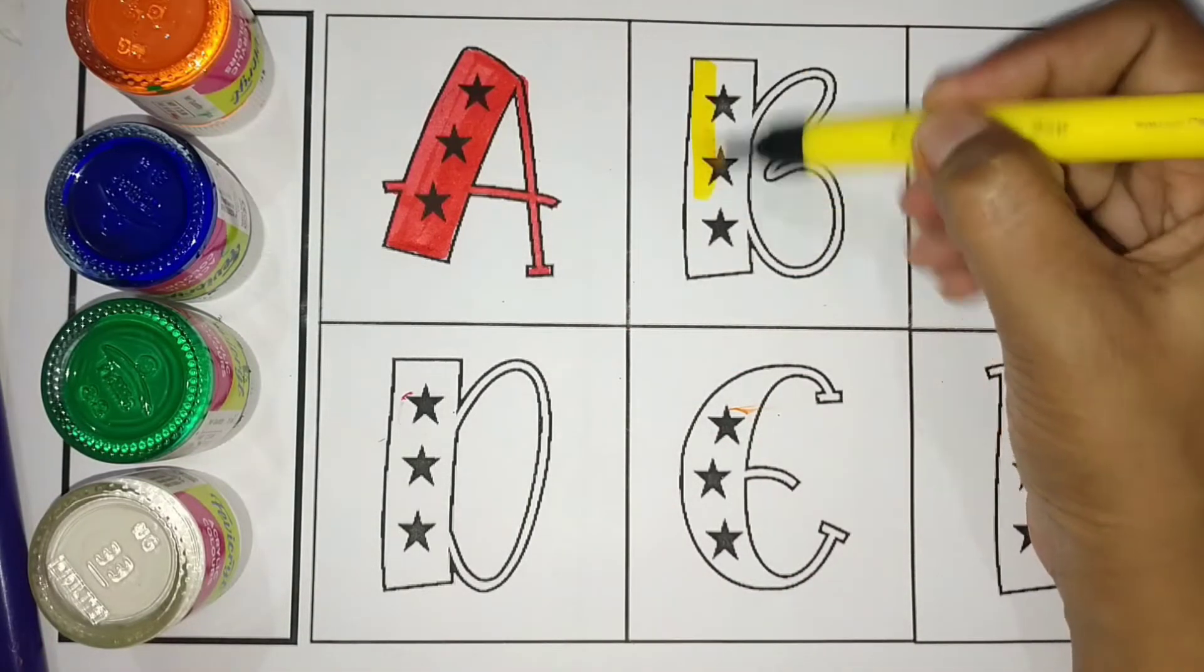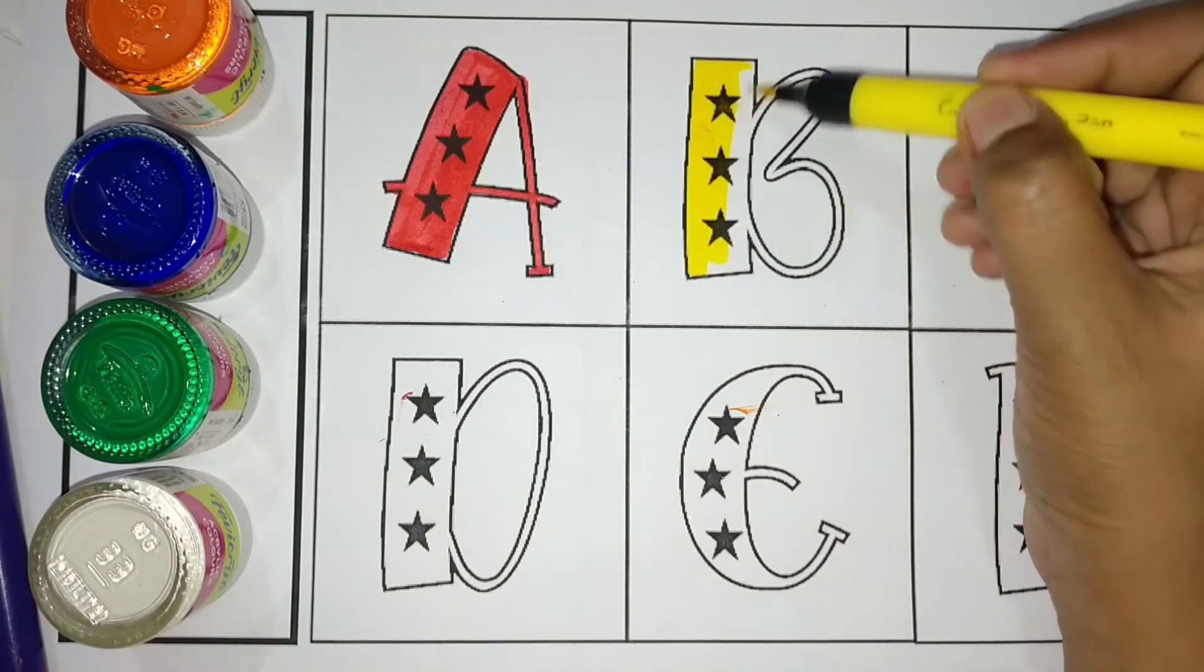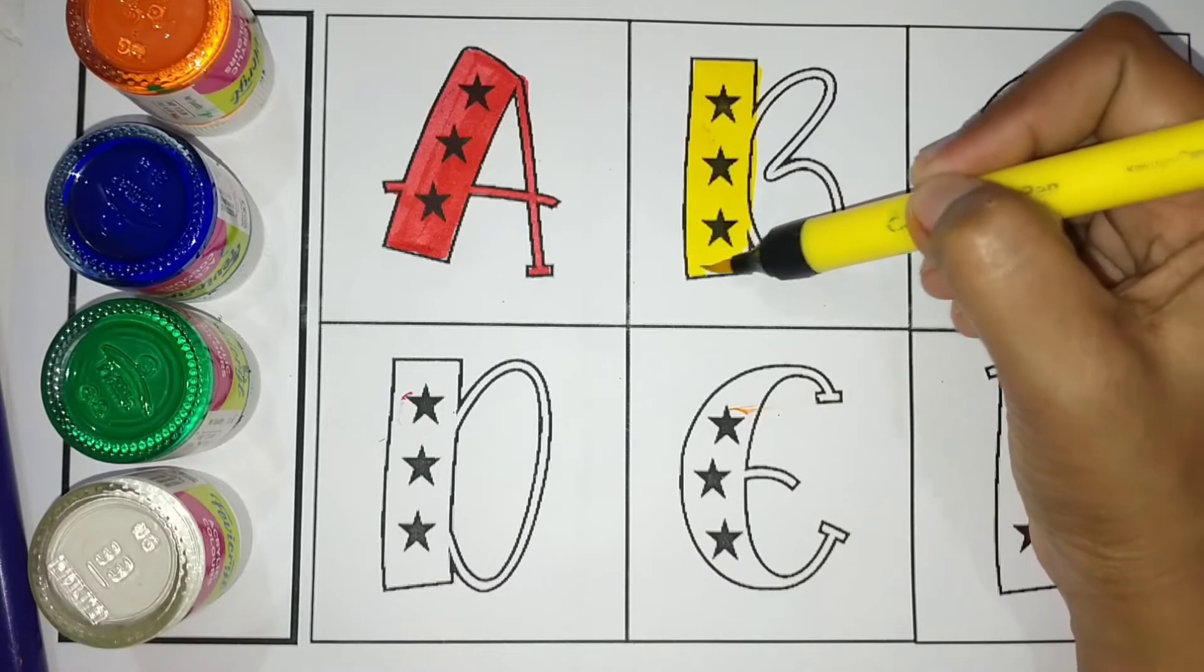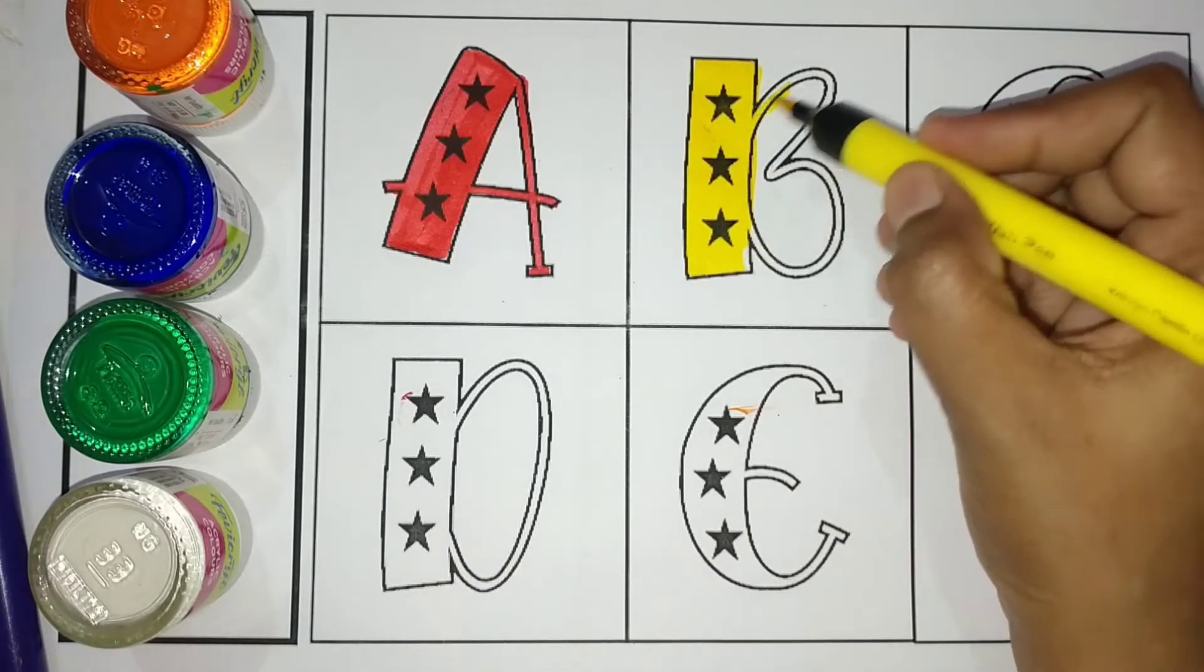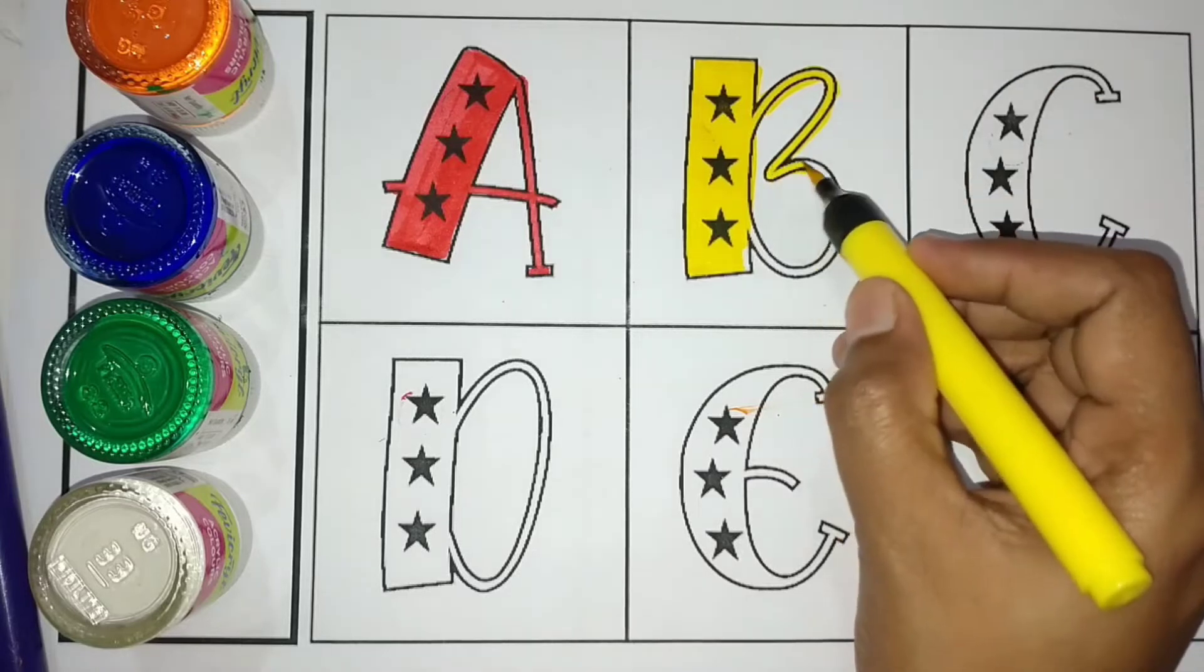Yellow color, B, B for Banana. Banana means Kela, B, B for Banana.